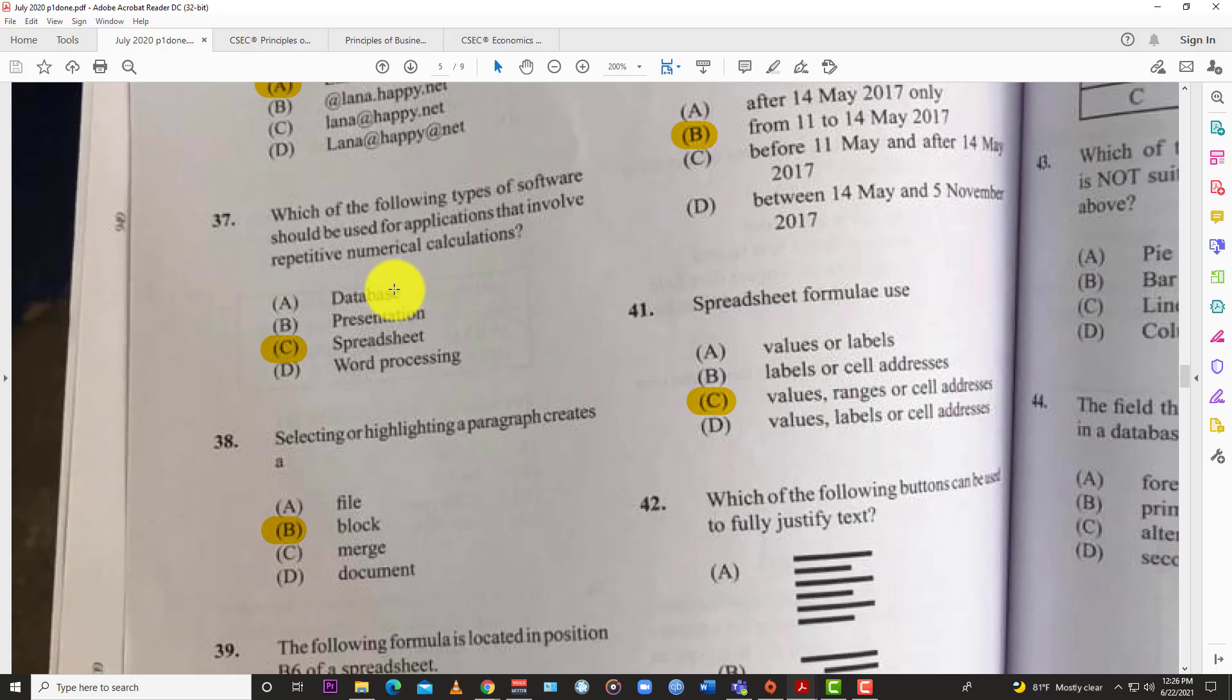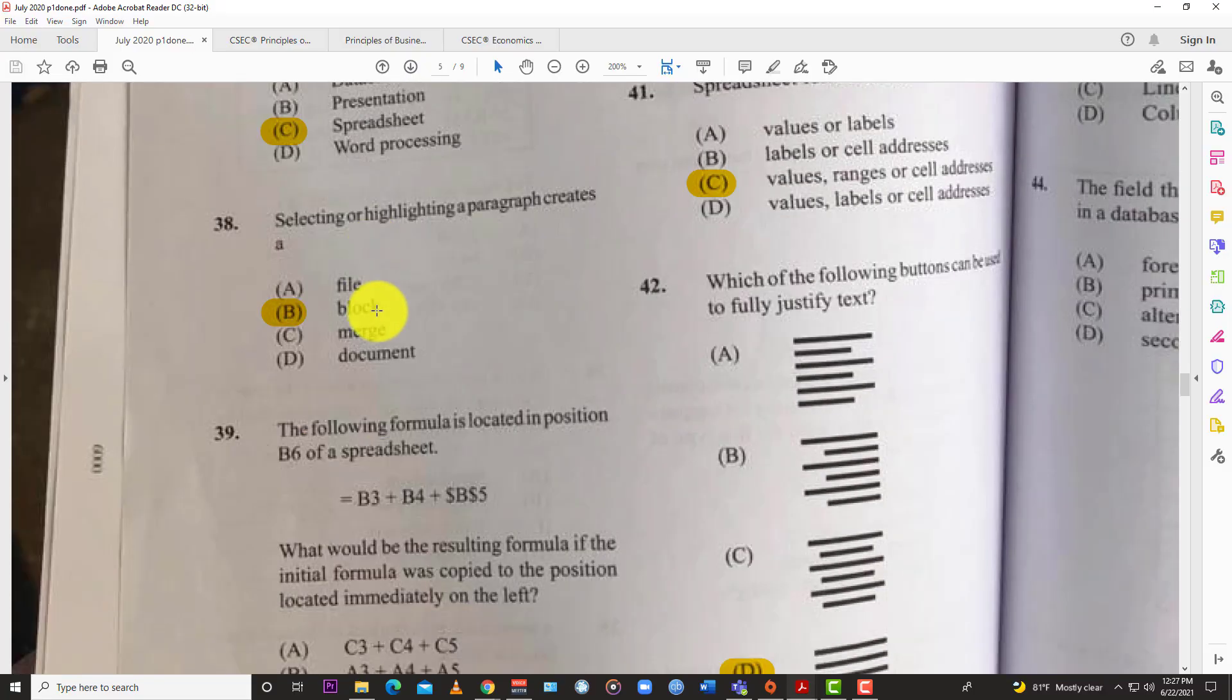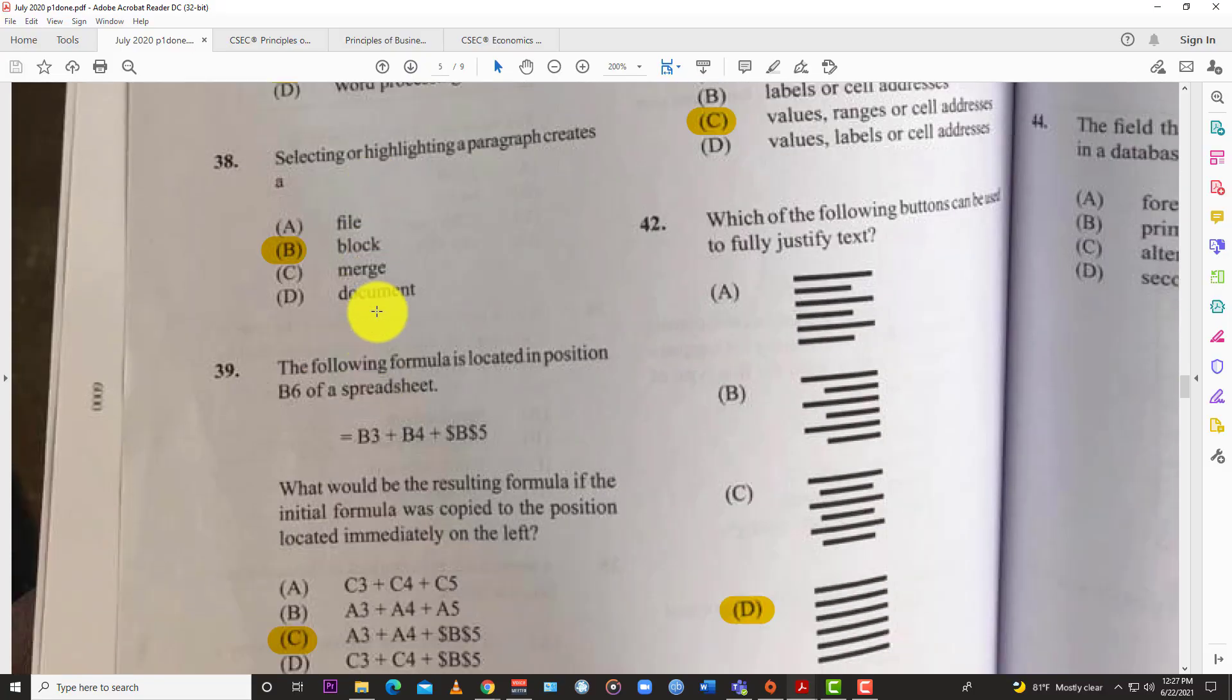Question 37: Which of the following types of software should be used for applications that involve repetitive numerical calculations? The best answer here is of course the spreadsheet. Word processing is for word processing, presentation software like PowerPoint is after you finish crunching everything and can present it. Then you have the database, which is basically for storage of data. So the best answer is spreadsheet—you do your Excel and then you go down, you go to town.